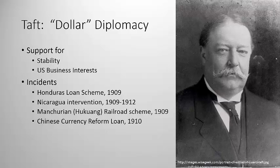Taft was not particularly interested in what Europe thought of the U.S. In 1909, he tried to arrange a loan for Honduras against foreign debt, in which his administration unsuccessfully negotiated a deal so that U.S. bankers would buy up $110 million of English-owned debt. Again, this was unsuccessful.